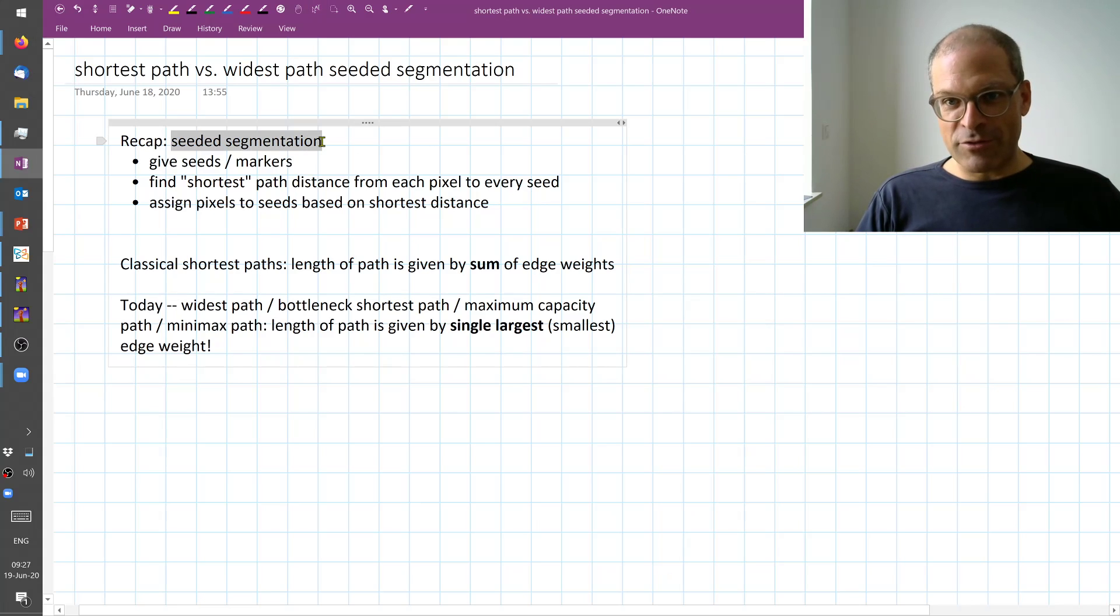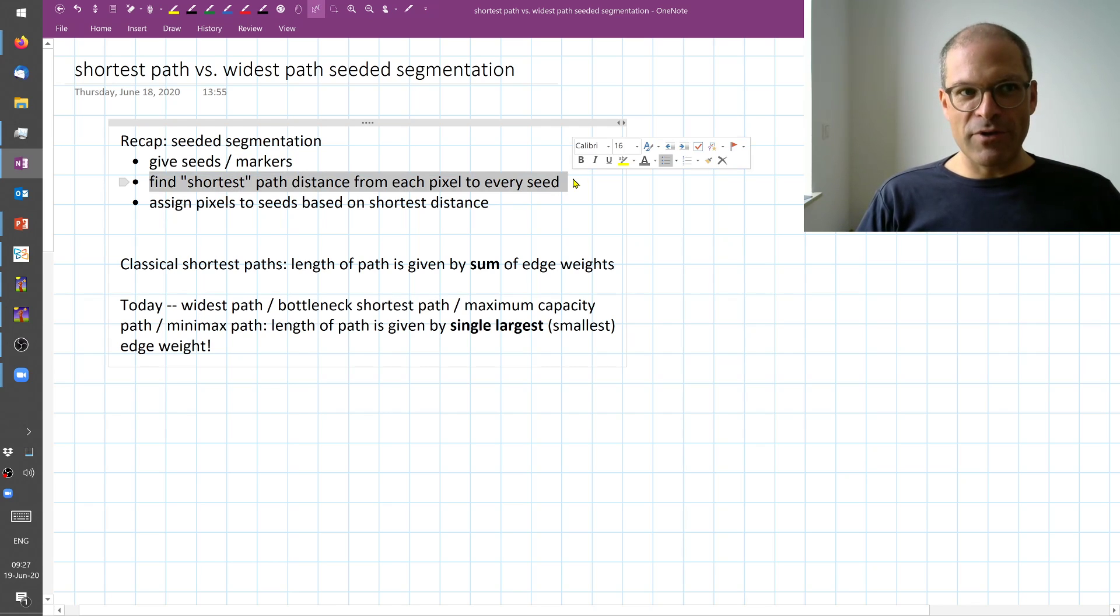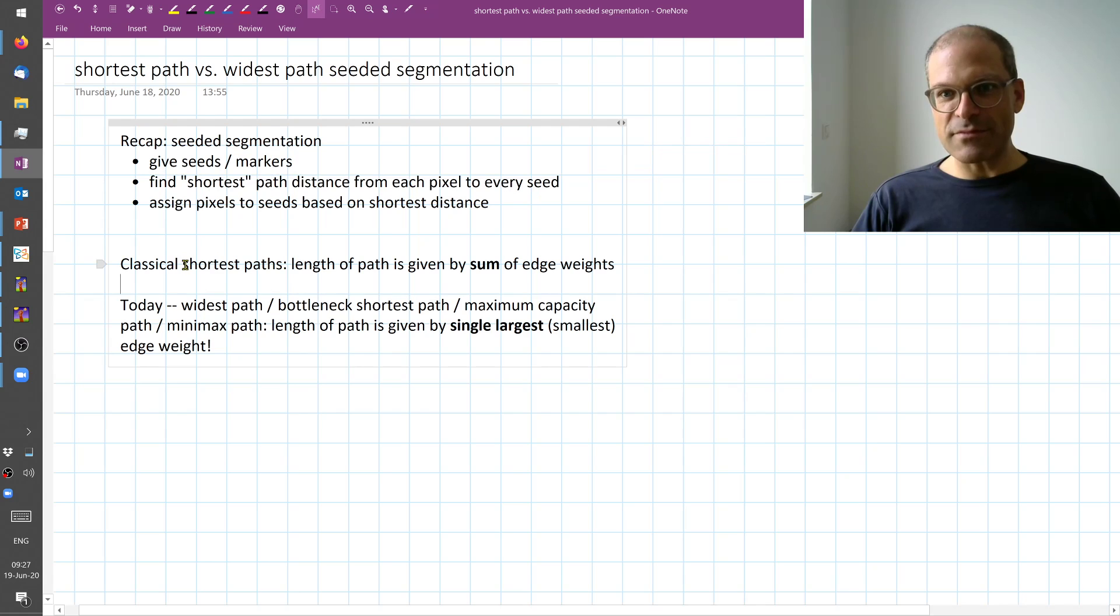We looked at seeded segmentation previously and the idea was that the user needs to give seeds or markers, and then we would find from any pixel in the image the shortest path to every seed, and then we assign each pixel to one seed based on which one is closest. Now there are various definitions of what it means to have a shortest path. There is the classical shortest path. Here the length of path is given by the sum of the edge weights and that's what we discussed so far.